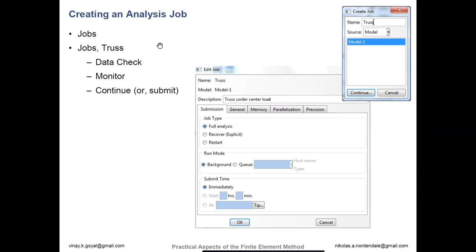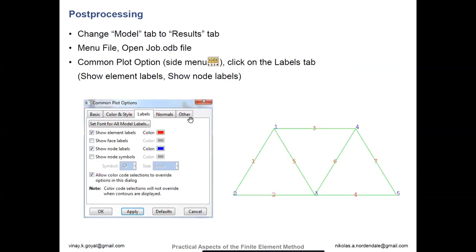From there you'll create a job. From the job you can do multiple things. You can do a data check — submitting Abaqus to the preprocessor to verify that the format of your input file is correct, looking for all the appropriate keywords. If data check comes out good, you can submit the analysis to the solver to actually run. Then once you have the results, you can open up the actual ODB file and view the results.